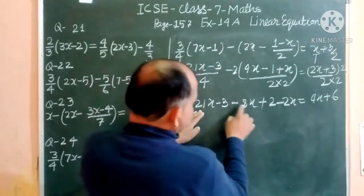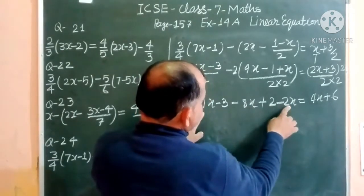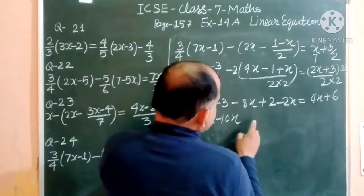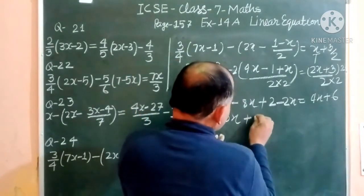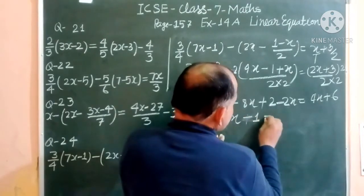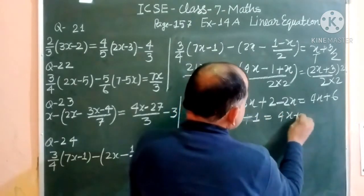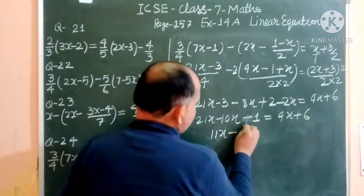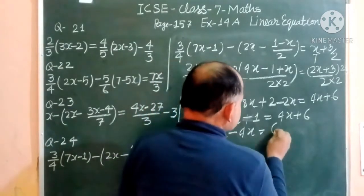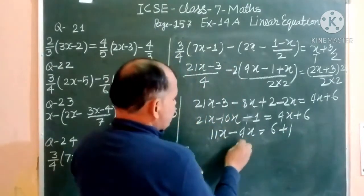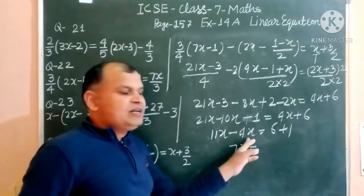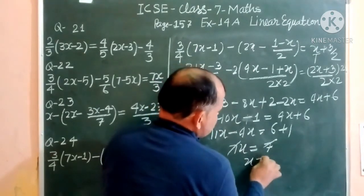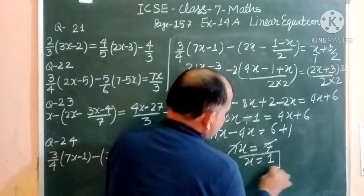After removing denominators we have: 21x - 3 - (8x - 4) + 2x = 4x + 6. Expanding: 21x - 8x - 2x - 3 + 4 - 2x = 4x + 6. Wait, combining x terms: 21x - 10x = 11x, then 11x - 4x = 7x. So 7x = 7, giving x = 1.